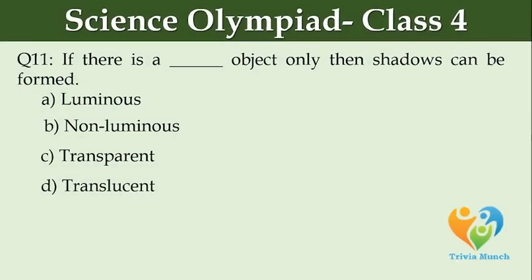If there is a dash object, only then shadows can be formed. Option A: luminous. Option B: non-luminous. Option C: transparent.